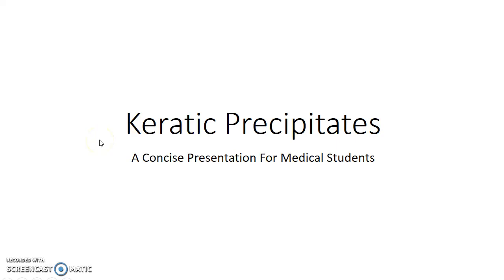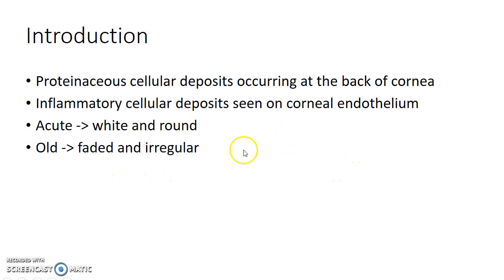Hello guys, this is Indian Medico and in this video we are going to see about keratic precipitates. This is a concise presentation for medical students. Keratic precipitates are proteinaceous cellular deposits occurring at the back of the cornea. They are nothing but inflammatory cellular deposits seen on the corneal endothelium.